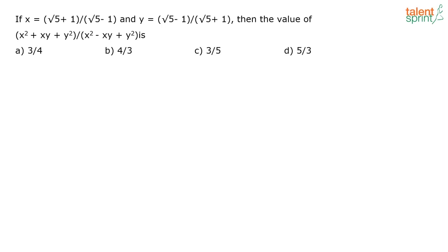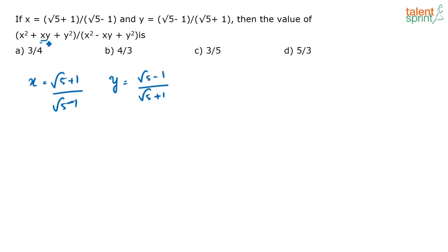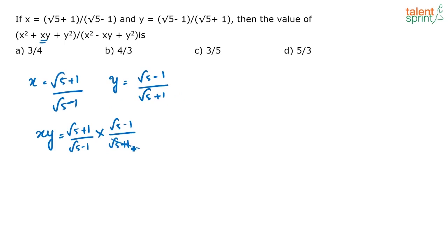The key to these questions is knowing how to rearrange. What is given? X = (√5 + 1)/(√5 - 1) and y = (√5 - 1)/(√5 + 1). You have to find x² + xy + y² divided by x² - xy + y². First, find xy: it is (√5+1)/(√5-1) × (√5-1)/(√5+1). These cancel, so xy = 1.